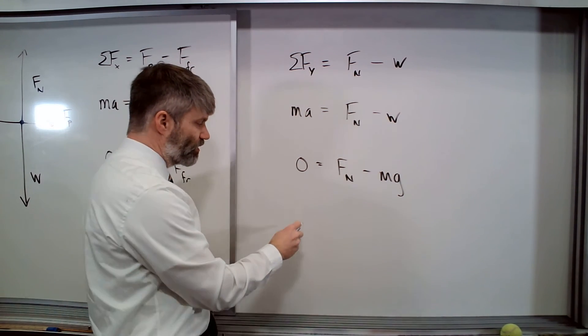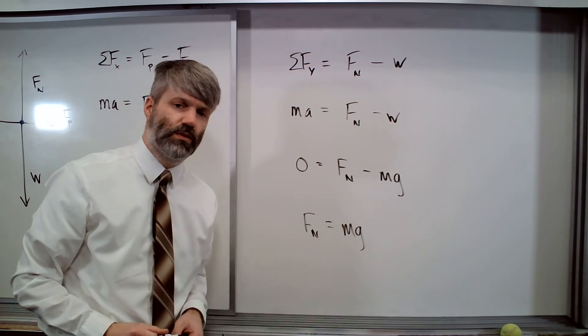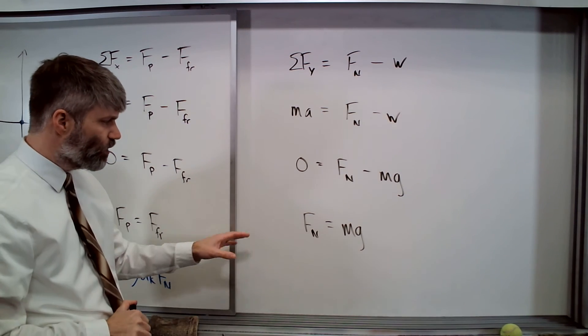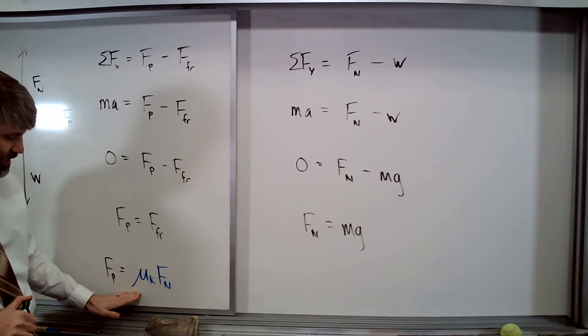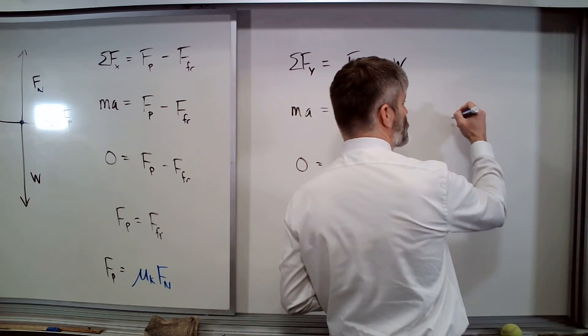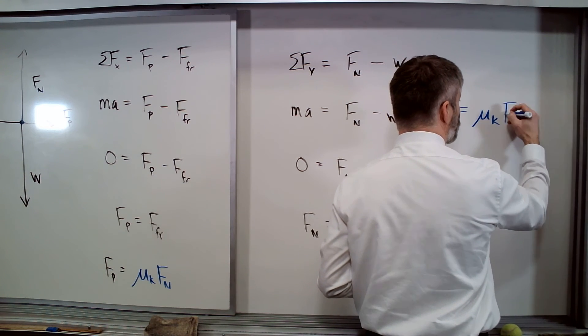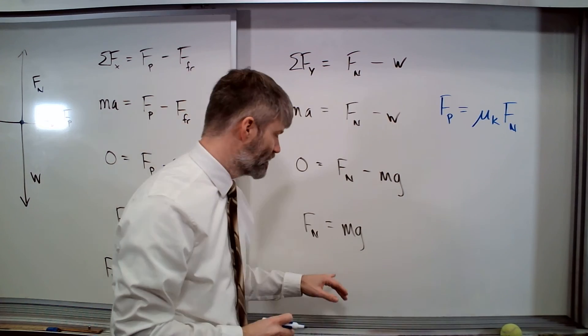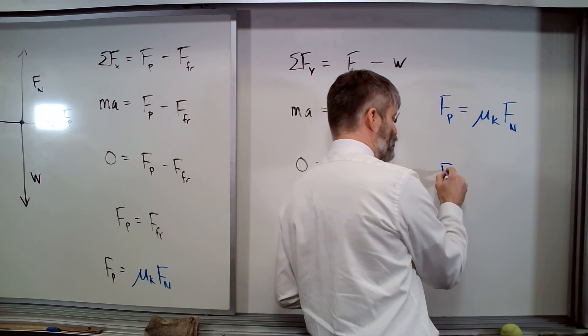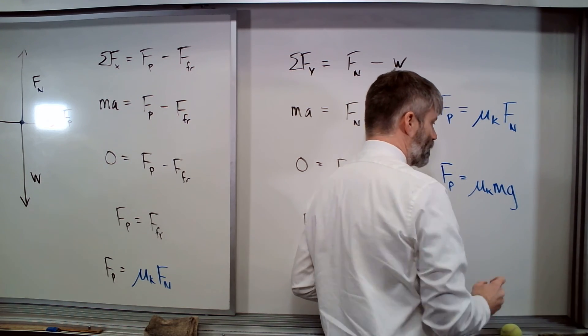So we can see here that the normal force is going to equal the mass times the acceleration due to gravity. We can take this value and put this into our equation now to find the force of Carol's push. We can see that the force of the push, being mu k times the normal force and knowing now that the normal force is equal to the weight of the object, or mg, we've got mu k times mg.